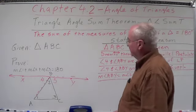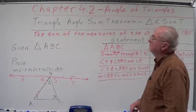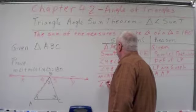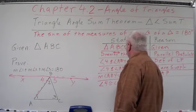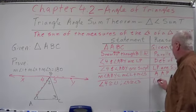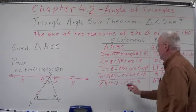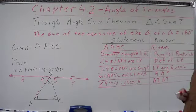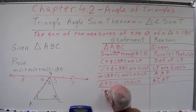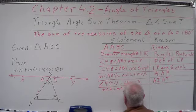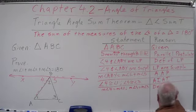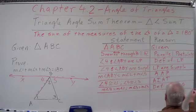Now, what do we know about angle 1 and angle 4, and angle 3 and angle 5, from our transversals with parallel lines? We know that angle 4 is congruent to angle 1 and angle 5 is congruent to angle 3, by the Alternate Interior Angle Theorem. That also means their measures are equal: the measure of angle 4 equals the measure of angle 1, and the measure of angle 5 equals the measure of angle 3, by the definition of congruent angles.